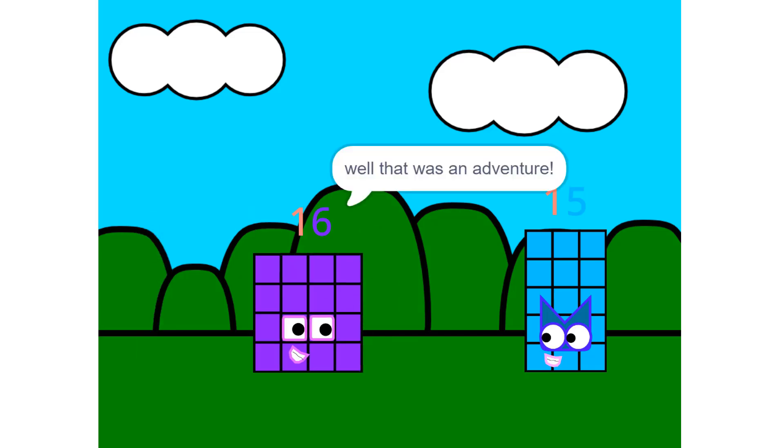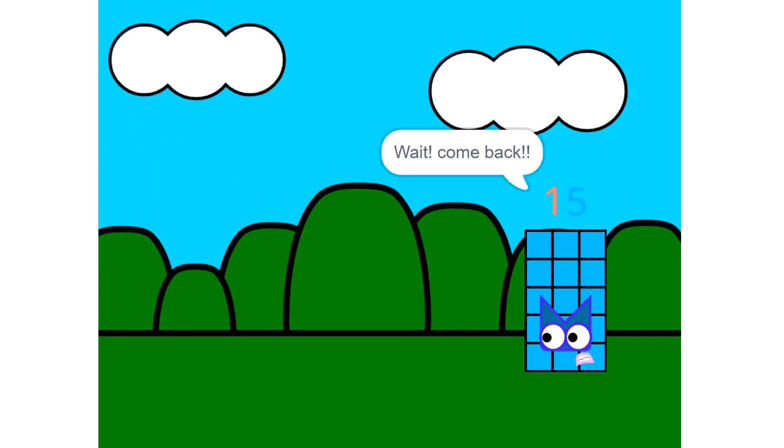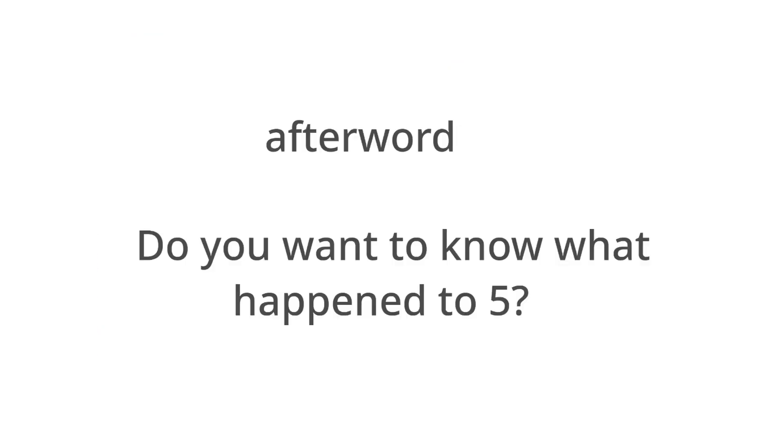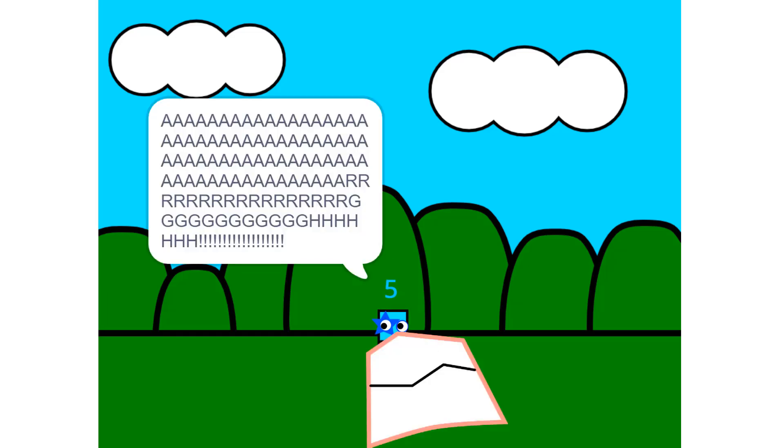Nine fours are 36. Woo! Big, big square made of squares. Up the stairs. Ten fours are 40. Great big rectangle. Come on! One four is four. Two fours are eight.